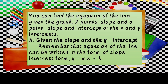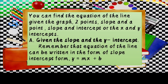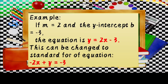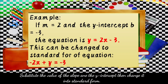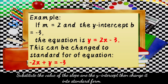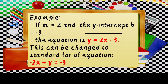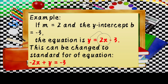You can find the equation of the line given a graph, two points, slope and a point, slope and intercept, or the x and y-intercepts. Letter A: given the slope and the y-intercept. The equation of the line can be written in slope-intercept form y equals mx plus b. For example, if m equals 2 and the y-intercept equals negative 3, the equation is y equals 2x minus 3. To change to standard form, transpose positive 2x to the other side — it becomes negative 2x — giving negative 2x plus y equals negative 3.